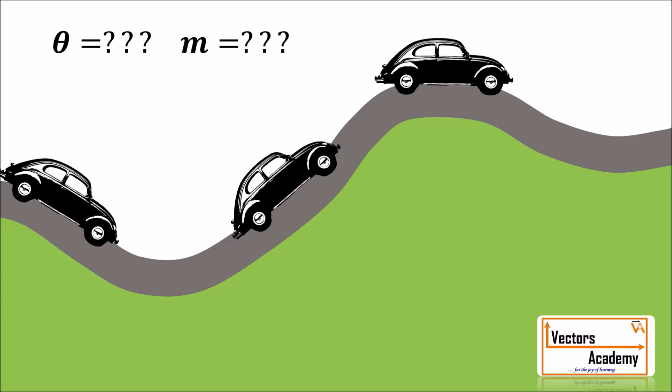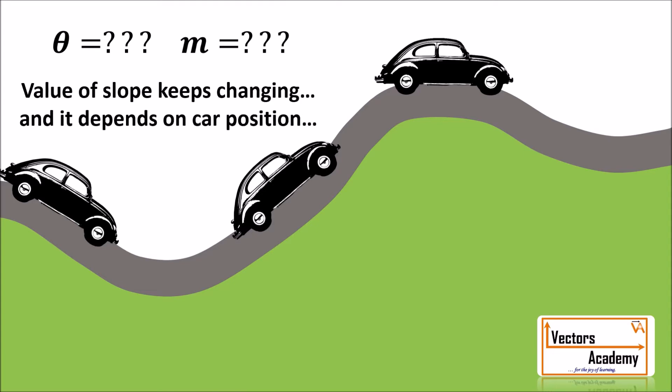The derivative of a curved function will be different at every point. At the first position the car is moving downwards, so the slope is negative. At the second position the car is moving upwards, so the slope is positive. At the third position the car is exactly horizontal, so the slope is zero.